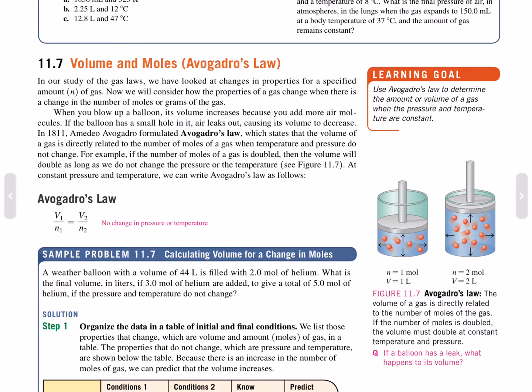For example, if the number of moles of gas is doubled, then the volume will double as long as we do not change the pressure or temperature. At constant pressure and temperature, we can write Avogadro's Law as follows: Volume 1 over number of moles of gas 1 equals volume 2 divided by number of gas 2.